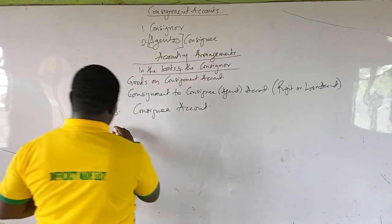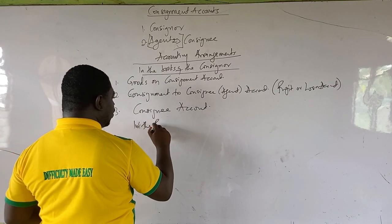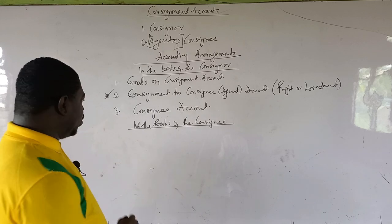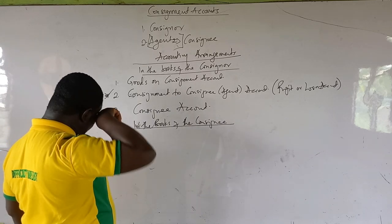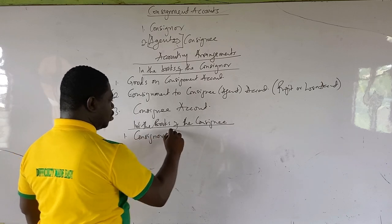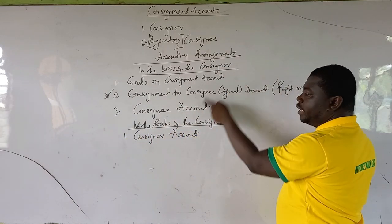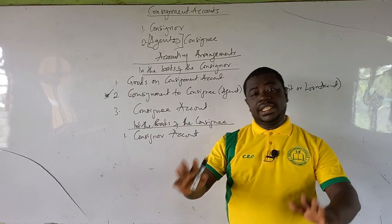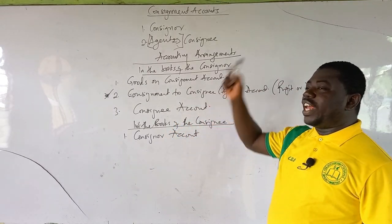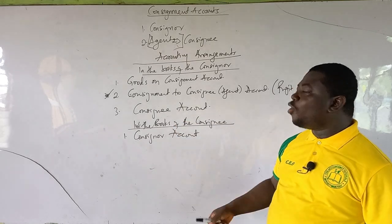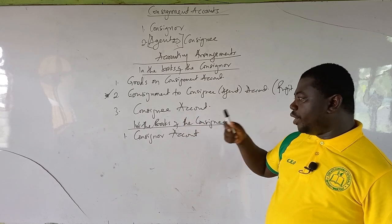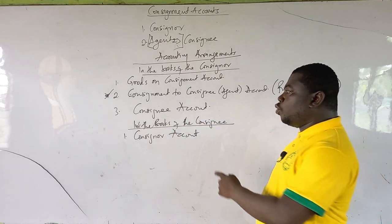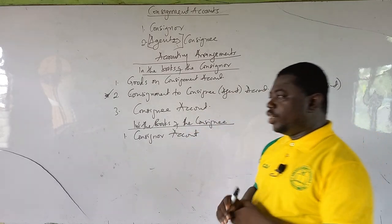In the books of the consignee, the main account prepared is the consignor account. The consignee account and the consignor account are the same thing — just in opposite directions. All items credited in the consignee account will be debited in the consignor account, and vice versa. Once you can prepare one, you can prepare the other — they are a mirror reflection of each other.